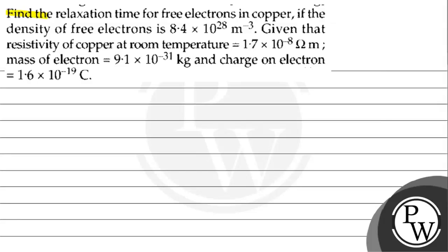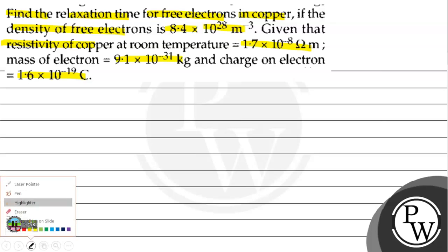Hello, the question says find the relaxation time for free electrons in copper if the density of free electrons is 8.4 × 10²⁸ per meter cube. Given that resistivity of copper at room temperature equals 1.7 × 10⁻⁸ ohm meter, mass of electron equals 9.1 × 10⁻³¹ kg, and charge on electron equals 1.6 × 10⁻¹⁹ coulomb.